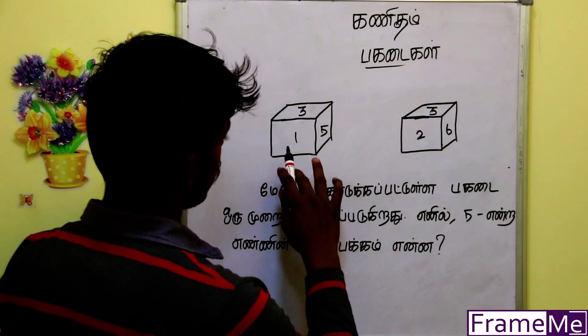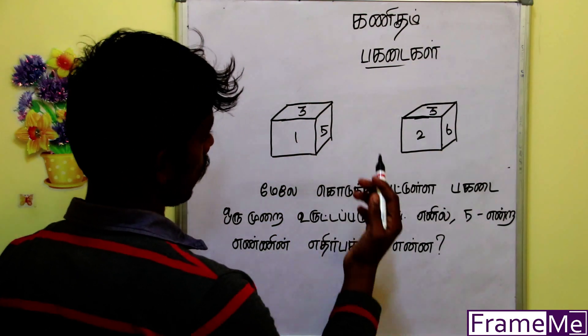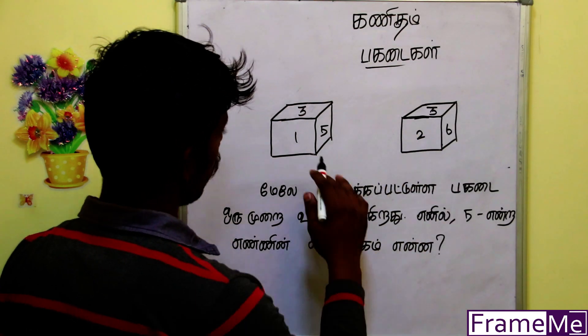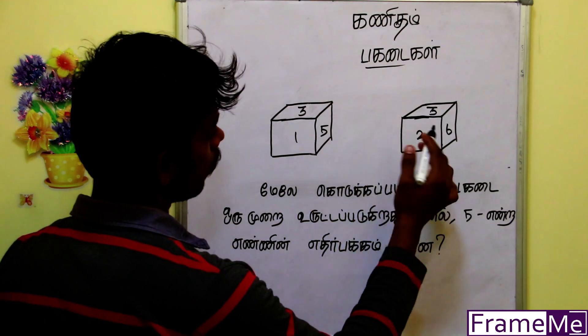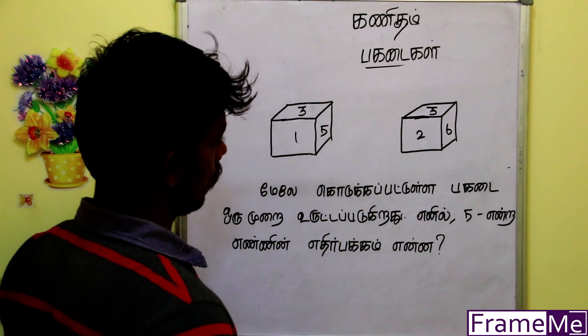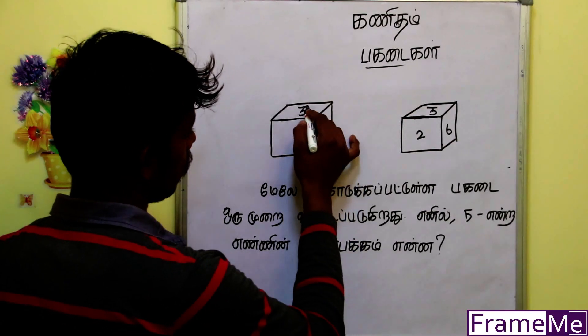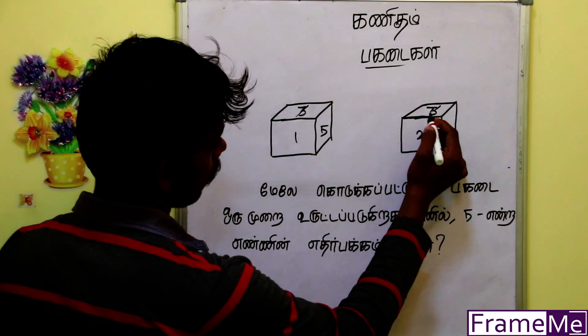In the first one, you have 3 times. In the second one, you have 3 times. There are 1, 3, 5 and there are 2, 6. So the common number is 3.